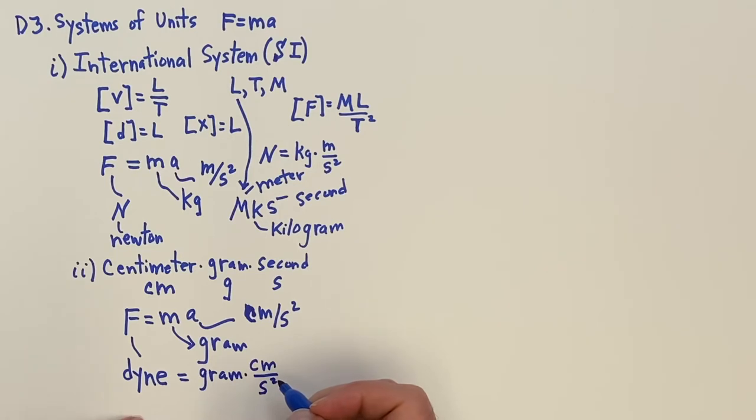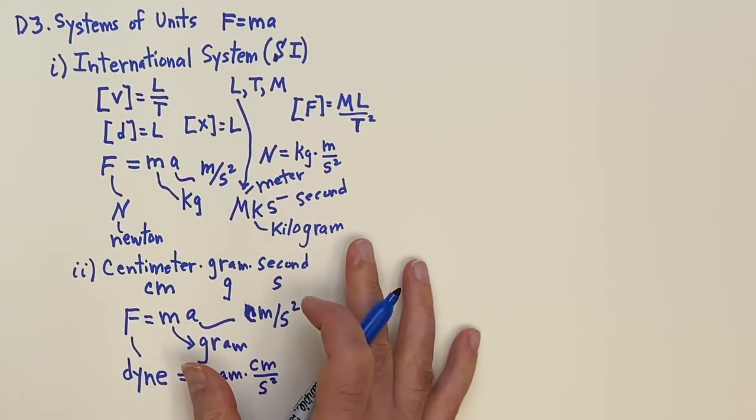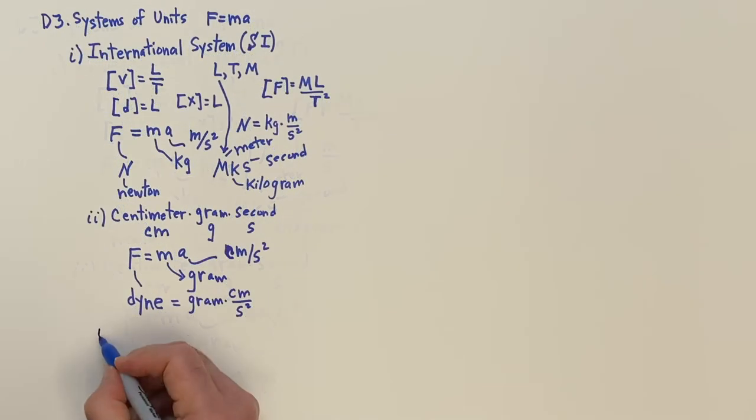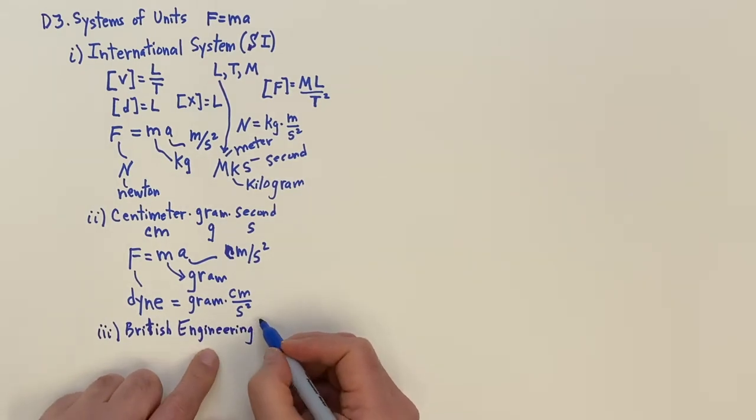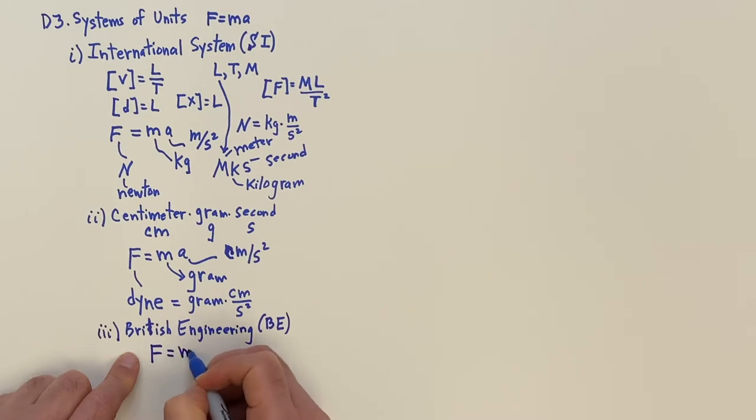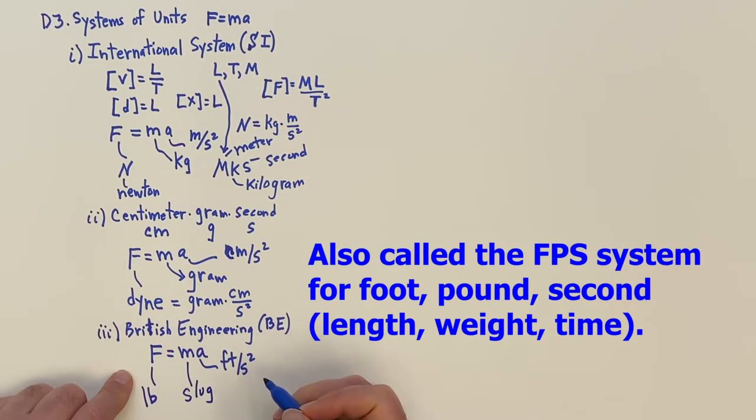So we can write down that a dyne is equal to a gram times centimeter per second squared. Now it's very easy to convert those, and we're going to do those in a second. We'll do conversions later. And then the last system here is the British engineering system. And the U.S. system is derived from the British system.